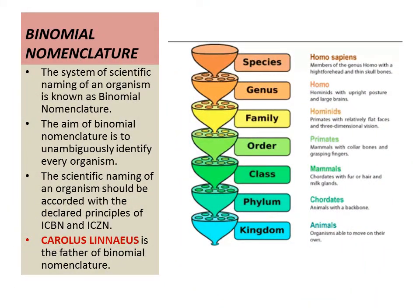Now we will learn about binomial nomenclature. The system of scientific naming of an organism is known as binomial nomenclature. The scientific name of an organism has two parts: the first part denotes the genus to which the species belongs, and the second part identifies the species within the genus.